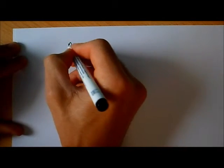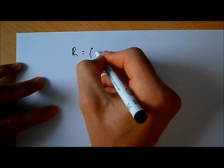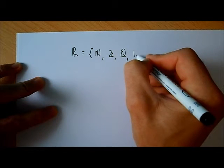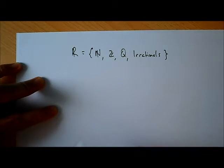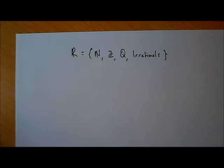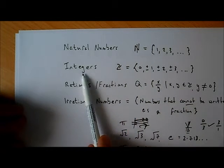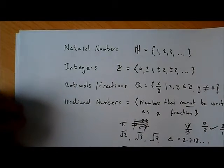There's one other set of numbers called the real numbers, given the symbol R. The real numbers are simply all of the numbers mentioned: the natural numbers, the integers, the rational numbers or fractions, and the irrational numbers. So those are the real numbers.